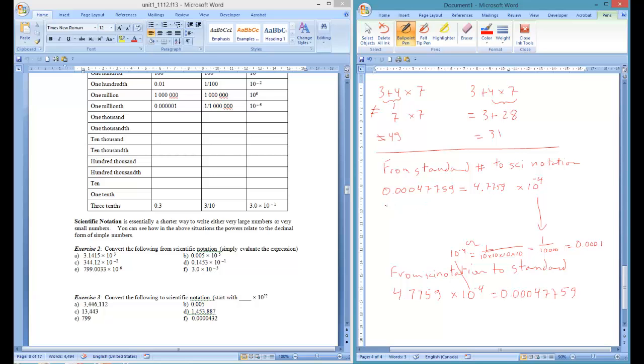If we had a number like 47,759, we'd have the same first, but the exponent would change. So the same first element, 4.7759, but now this number, 1, 2, 3, 4, or 10,000. So that's a positive 4.